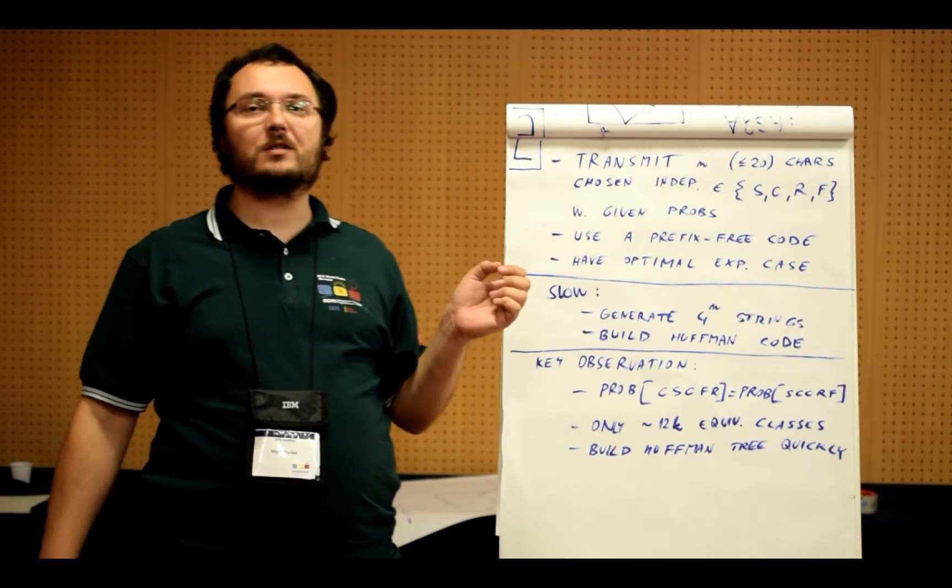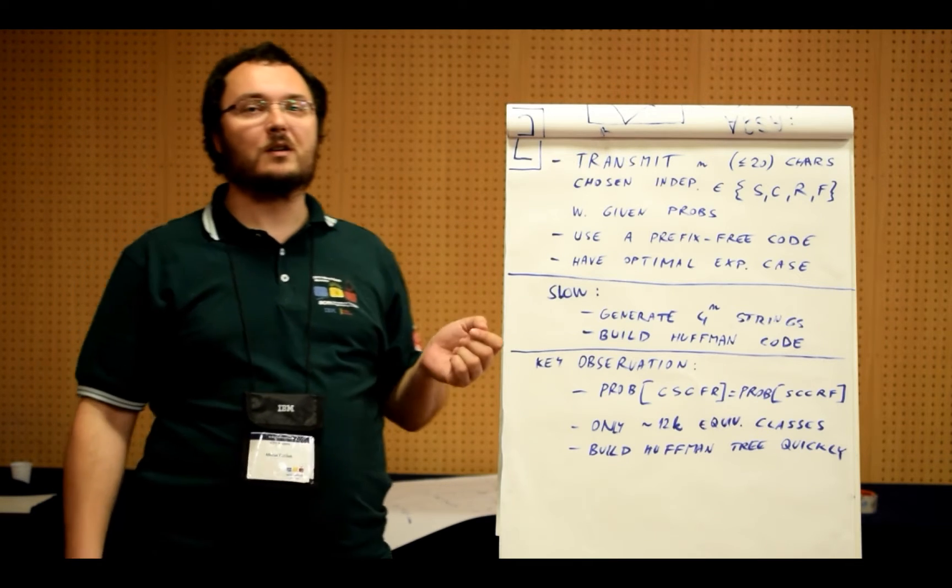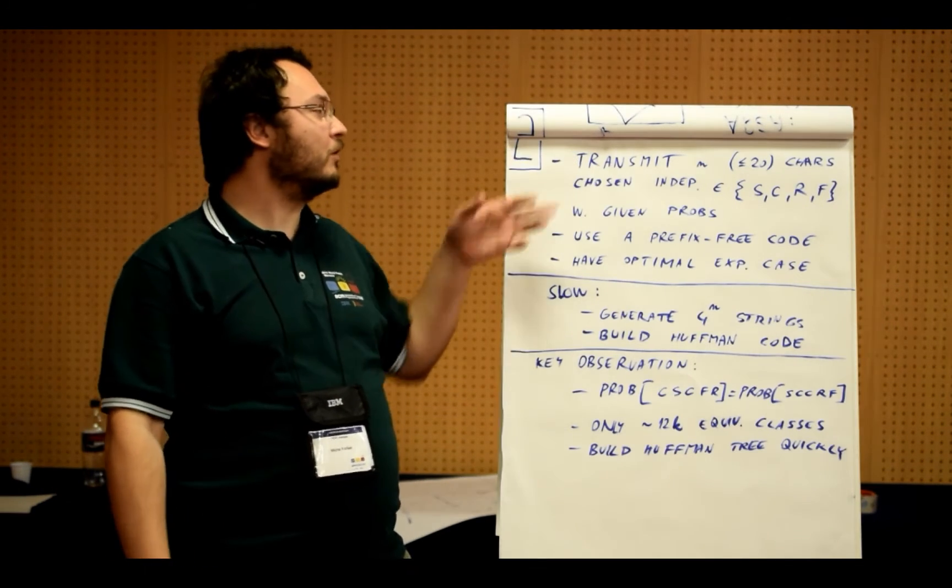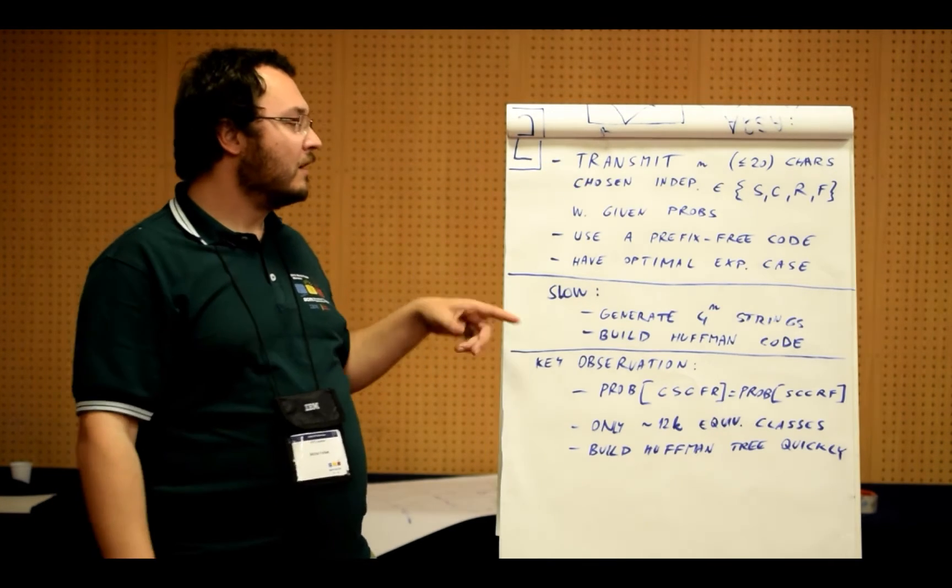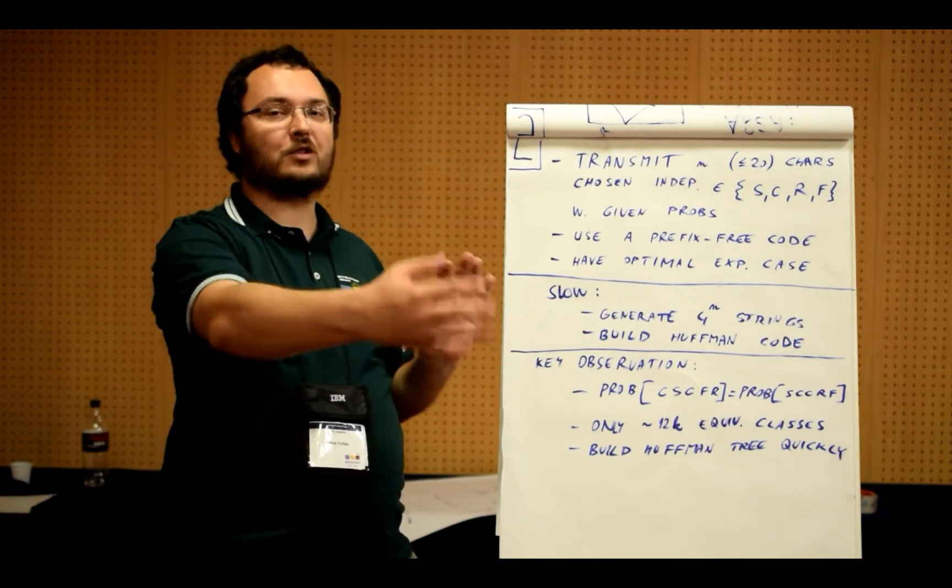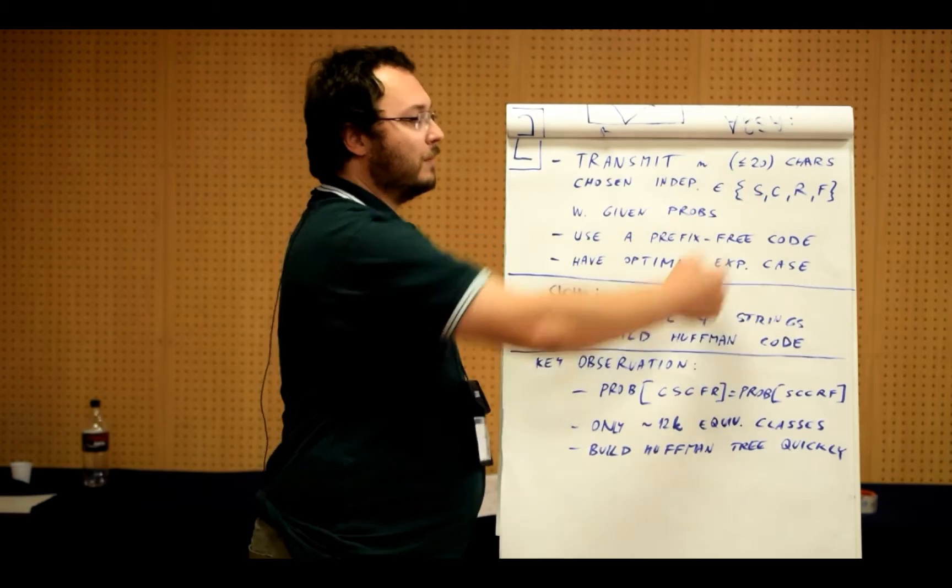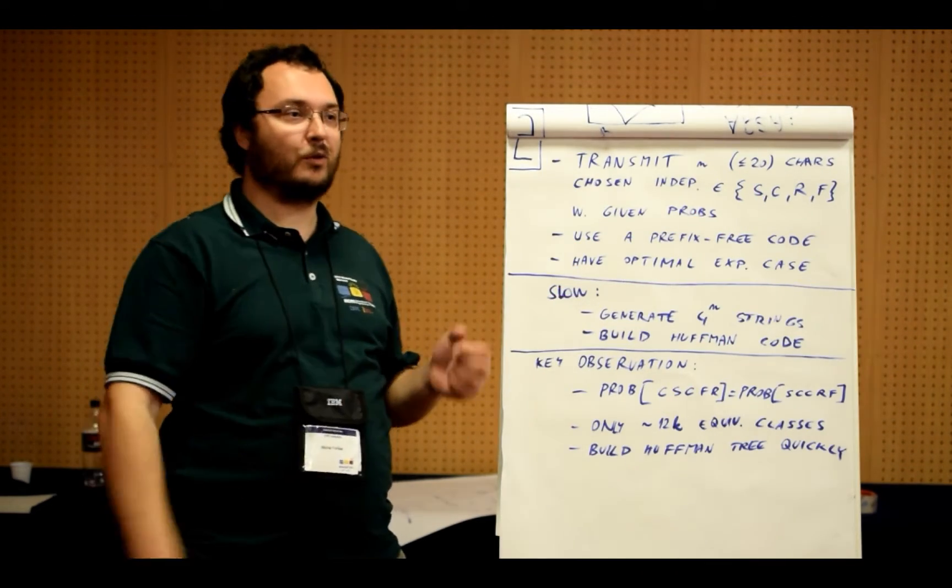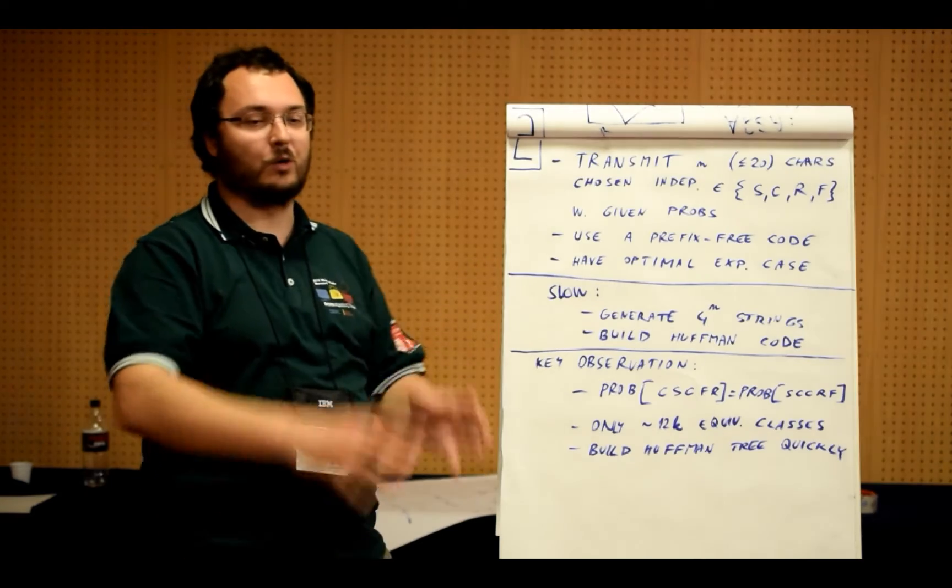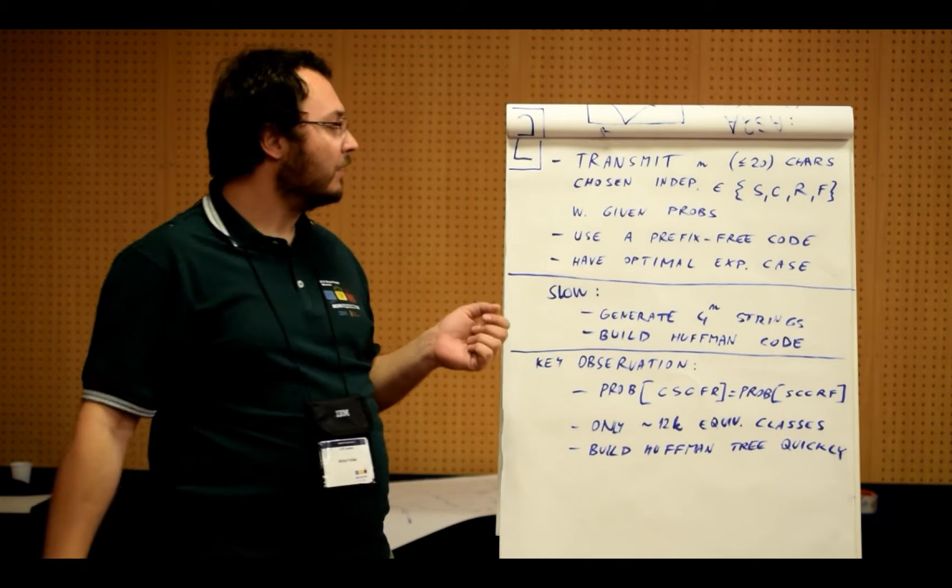We actually know how this works, and we know that the optimal prefix-free code is the Huffman code. So if n were smaller or the alphabet were smaller, there would be a slow inefficient solution where you generate all possible strings, for each of these strings you can compute the probability as the product of the probabilities for the individual days, and then you sort all of them or put them into a priority queue and build the Huffman code, always taking those two events with the smallest probability, merging them together, and so on.